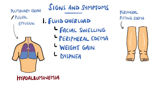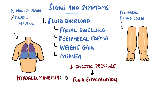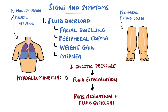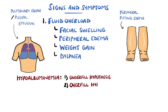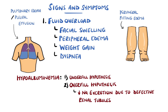The reduction in blood levels of albumin causes the oncotic pressure of the blood to fall, meaning fluid will more readily leak into the surrounding tissues, causing edema. This is sensed as hypovolemia, because less fluid is in the vessels, which then triggers the renin-angiotensin-aldosterone system, causing retention of salt and water. This is known as the underfill hypothesis, while another is the overfill hypothesis, where defective renal tubules result in reduced sodium excretion, promoting fluid retention.